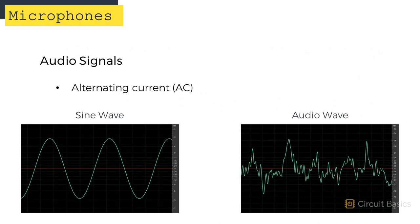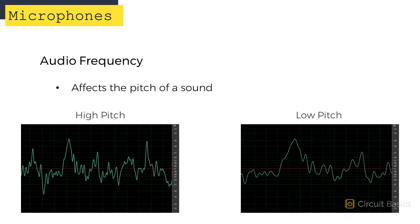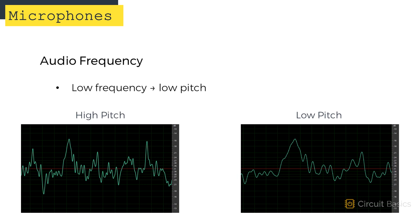Audio signals are an alternating current, similar to the current supplied by the electrical outlets in your home. However, while AC current in your home is a sine wave with a static frequency and wavelength, audio waves are highly variable. The frequency of an audio signal is directly related to the pitch of a sound. A higher frequency audio signal creates a higher pitched sound, and a lower frequency audio signal creates a lower pitched sound.